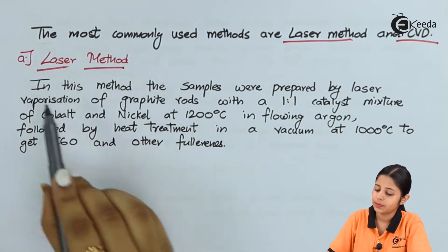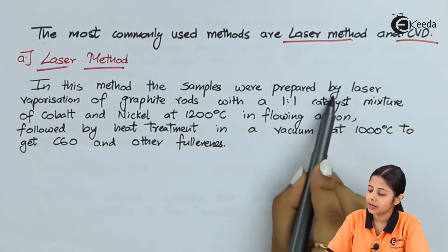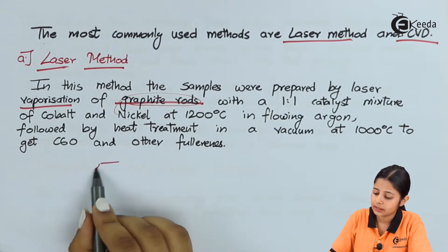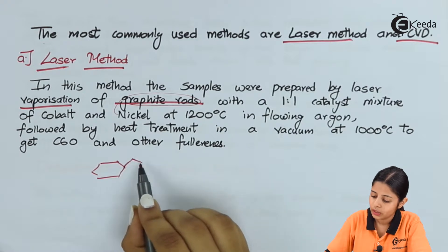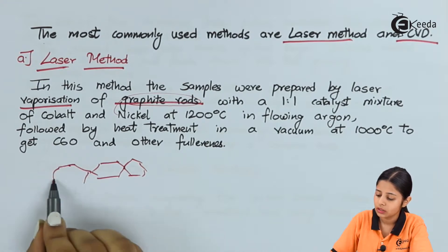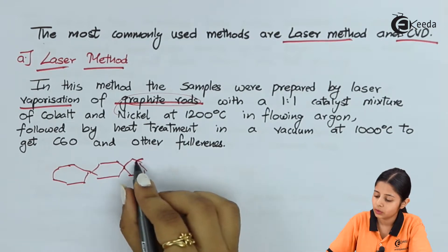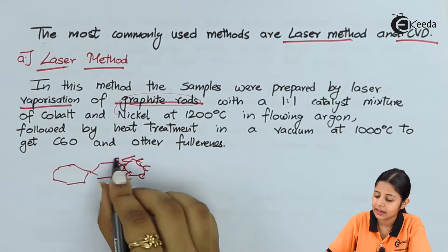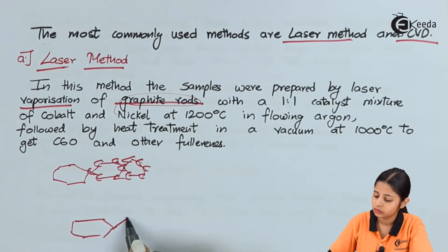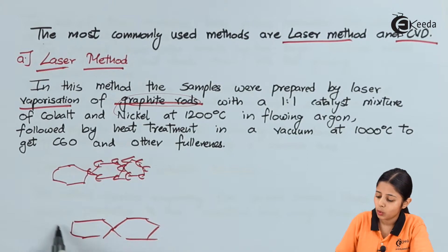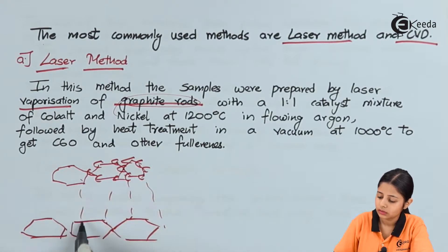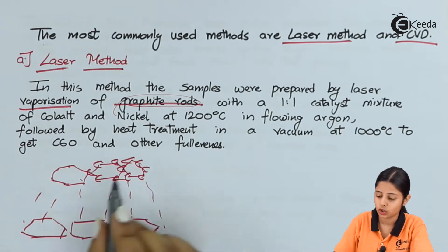The first method is the laser method. In this method, samples are prepared by laser vaporization of graphite rods. A graphite rod is entirely made up of carbon — there are hexagonal rings arranged in layers, each layer made entirely of carbon with carbon at all the vertices. Graphite contains carbon and no other element, and two layers are joined together by weak forces known as van der Waals forces.